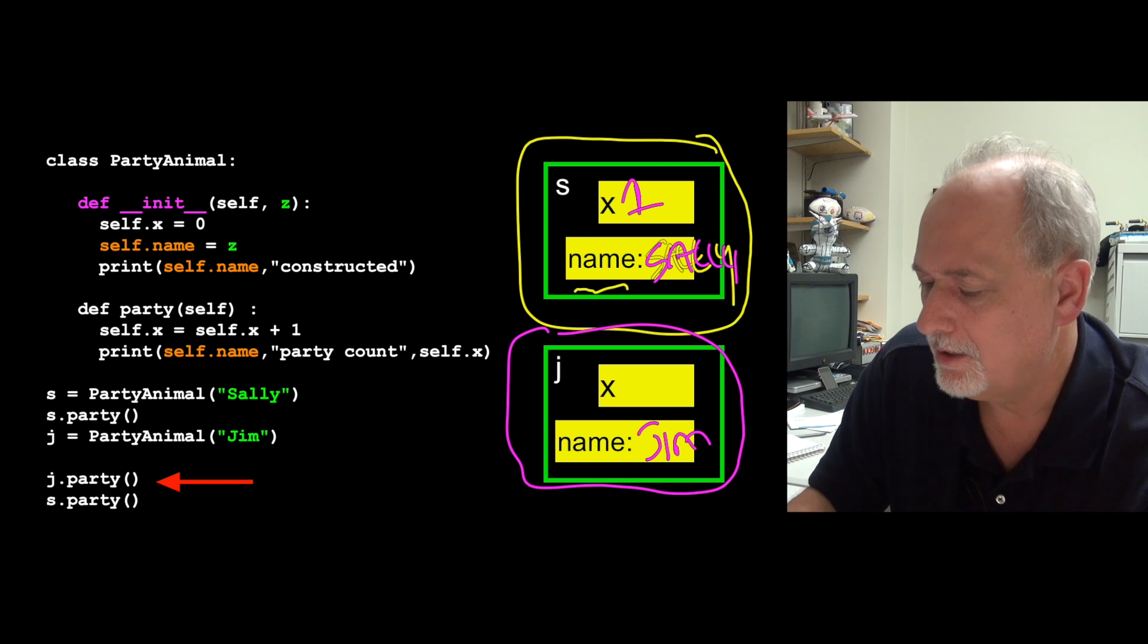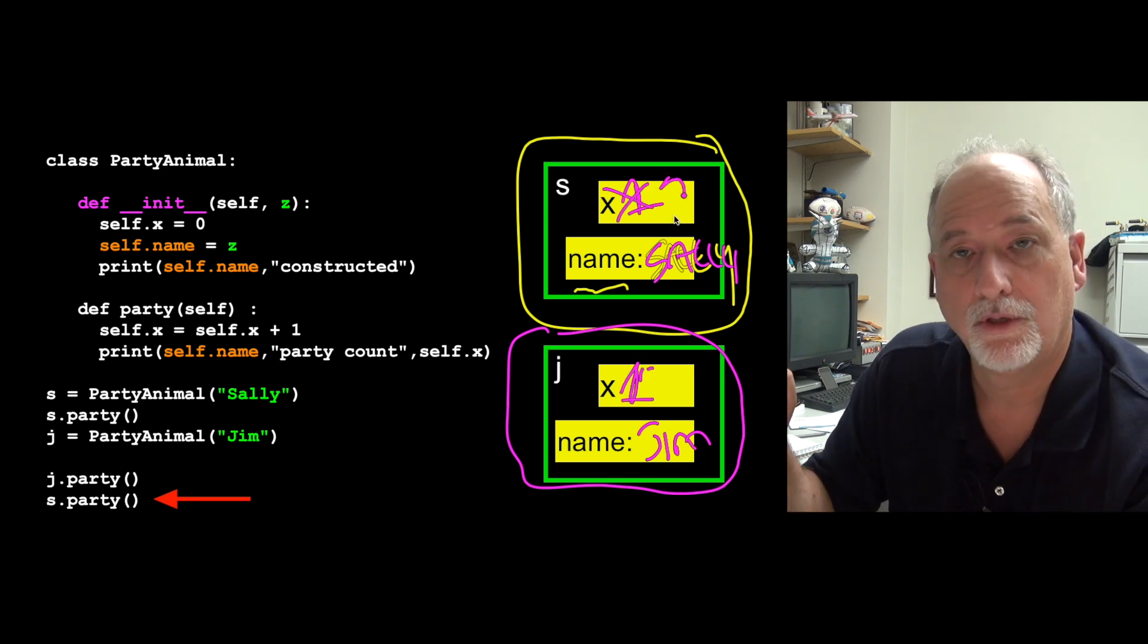And then we're going to call j.party, that turns that into a one, and then s.party will cause this to be a two.